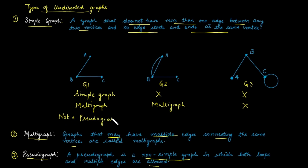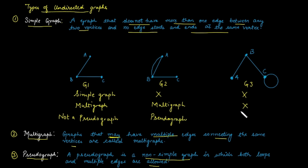What about graphs G2 and G3? In the case of G2, multiple edges are present, so it can be categorized as a pseudograph since it is not a simple graph — clearly it is a pseudograph. Graph G3: the answer is yes, it is a pseudograph because it is not a simple graph due to the self-loop at vertex C.